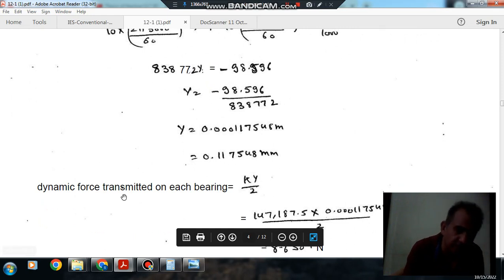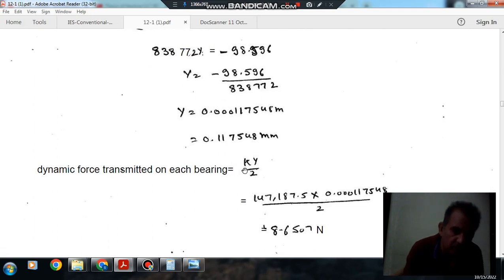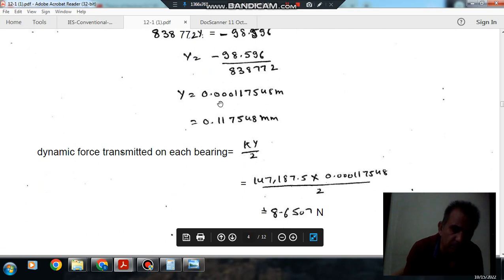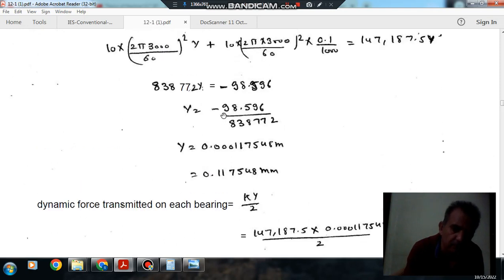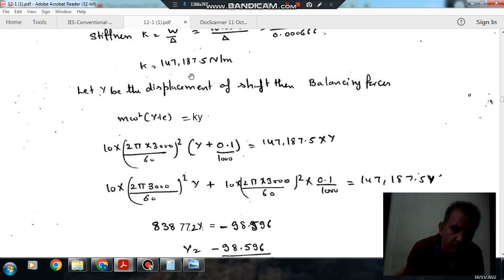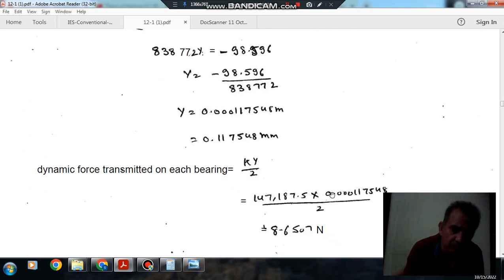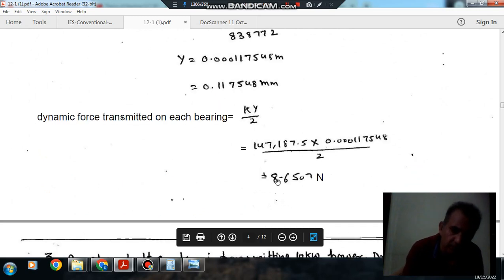There will be dynamic force exerted on the bearing, which will be KY/2. KY is the dynamic force exerted on the shaft, and on each bearing the force will be half, so it will be KY/2. K is 147,187.5 and Y is 0.000117548 m, which gives 8.65 N.